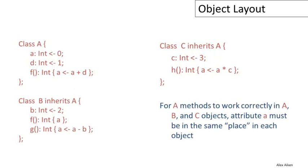The significance of this is what we discussed earlier. For all of these methods to work, attribute A is going to have to live in some place where all of them can find it when their generated code runs. Consider method F — it exists in all three classes, and when it runs, it will refer to attribute A. Even though the objects would be different — in one case running on an A object, in another on a C object — it will need to find attribute A. Therefore, attribute A has to be in the same place in each object.